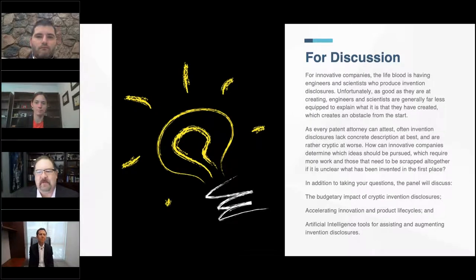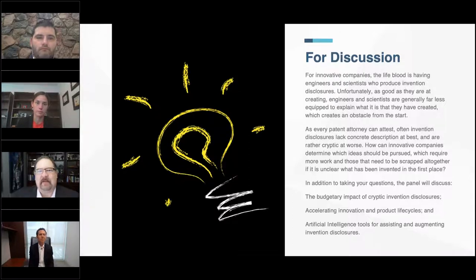So what I'd like to do is bring in the panel here to start us off. As I always do, open-ended questions so you guys can take it where you want initially. Let's go in the order in which I introduced you. Carlo, starting with you — what do you want people to think about as we talk about AI assisting inventors with disclosure or the importance of disclosures?